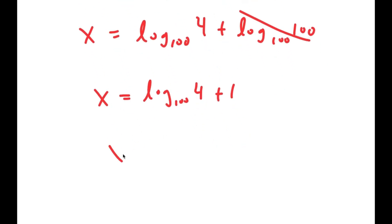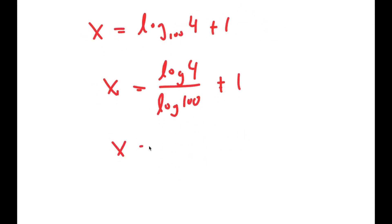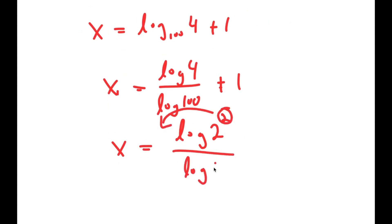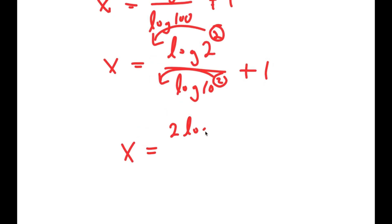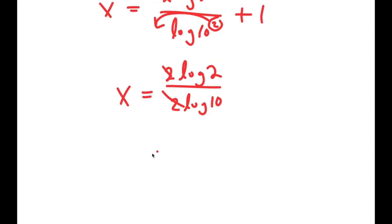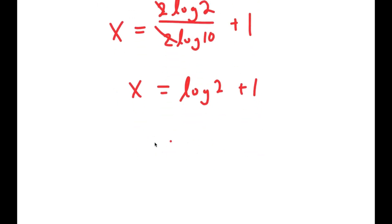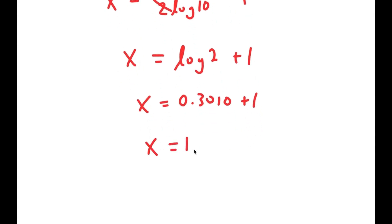Now, log base 100 of 4 is the same thing as log of 4 over log of 100. Now, log of 4 I can rewrite as log of 2 squared, and then I can move the 2 to the front. And log of 100 I can rewrite as log of 10 squared, and I can move the 2 to the front. So now I get 2 times log 2 over 2 times log 10. These two 2's cancel out, and log of 10 is just 1. So I get log of 2 plus 1, which is equal to 0.3010 plus 1, which is equal to 1.3010.